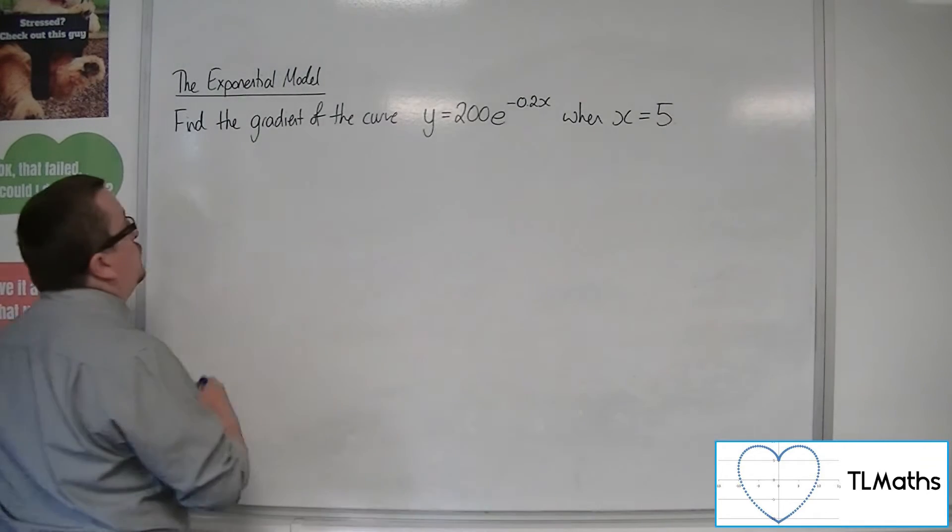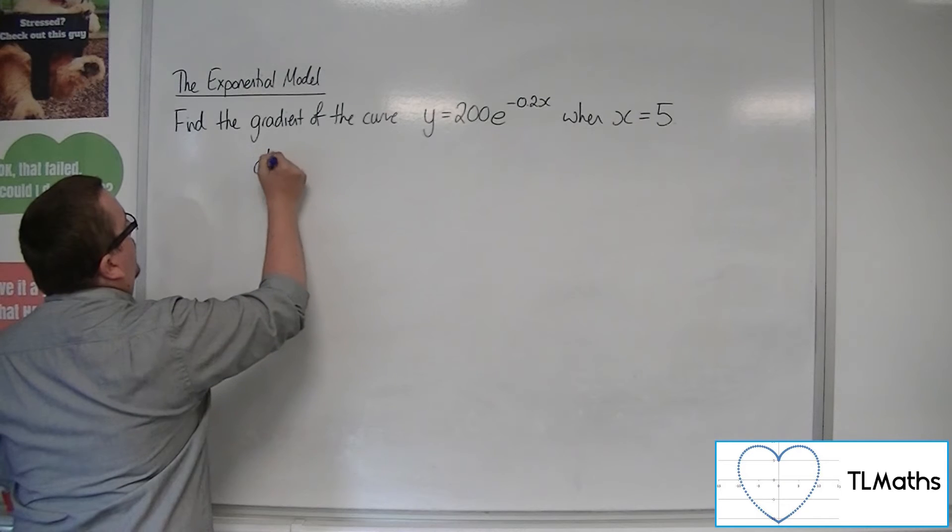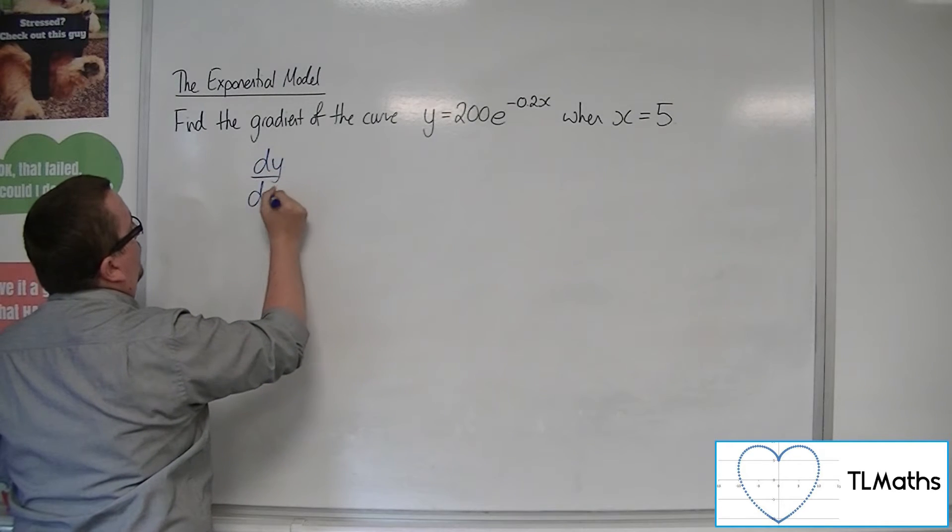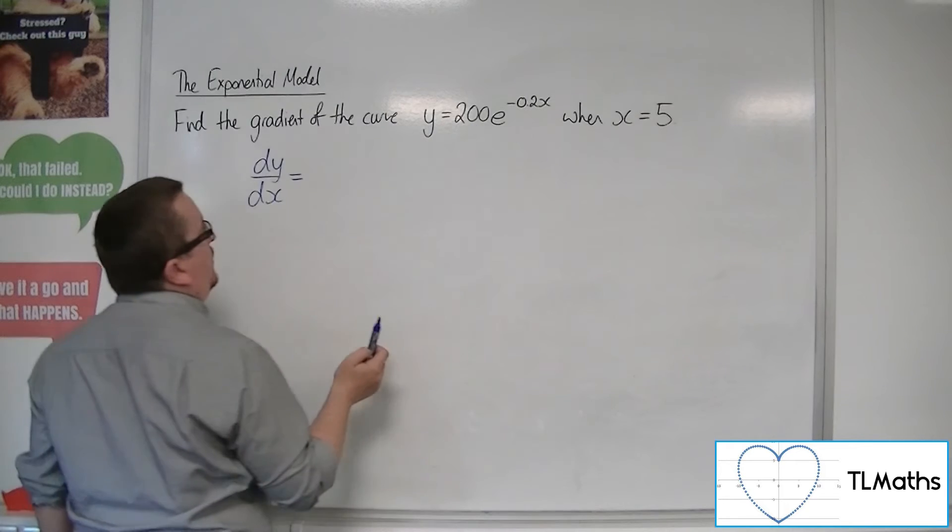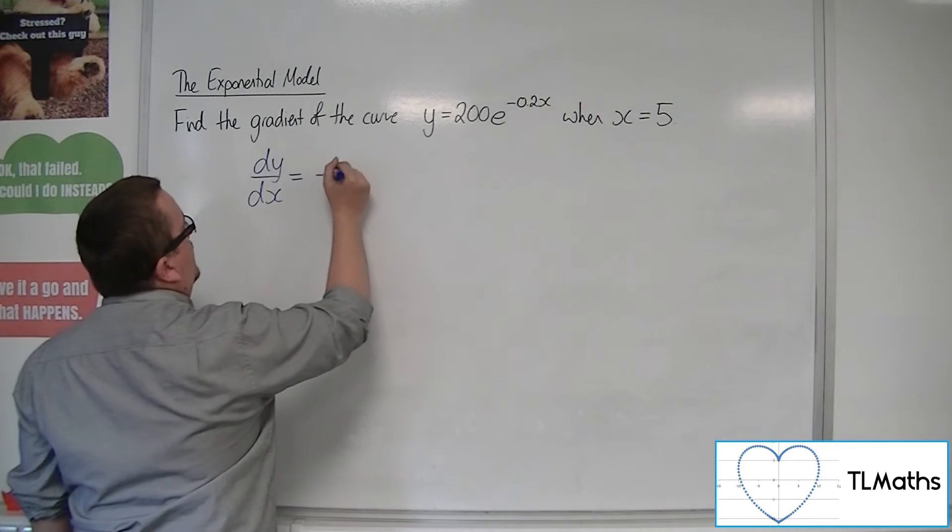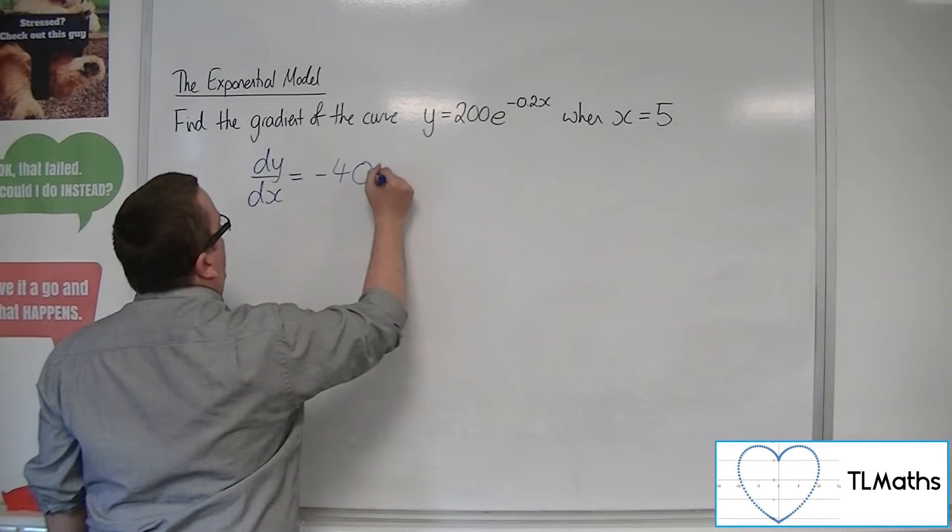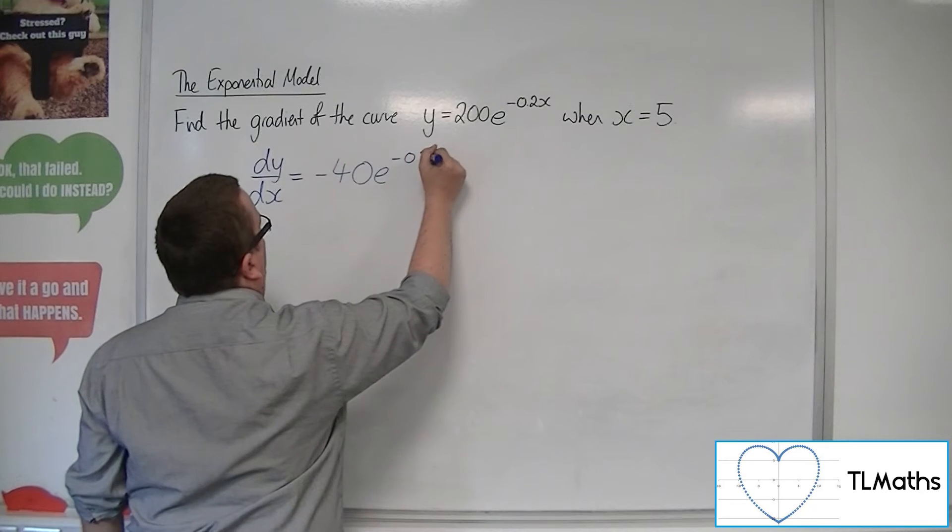So I first need to find the gradient function. dy by dx is equal to - now the minus 0.2 comes down and multiplies with the 200 - so minus 40e to the minus 0.2x.